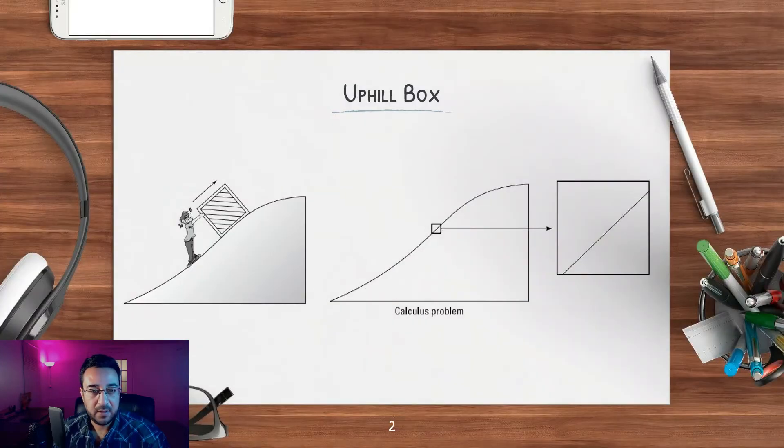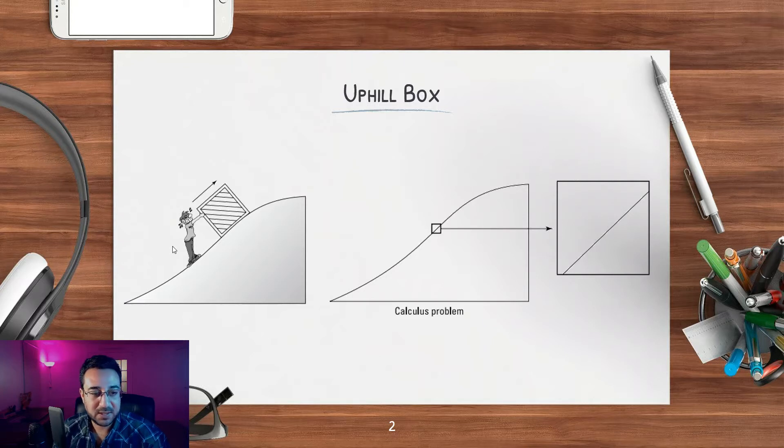Back to the uphill box problem. We said there's somebody pushing a box uphill. If the hill is linear, life is good. You can use the old mathematics to find the curvature, the length, or the force needed based on the weight of the box and all those details.